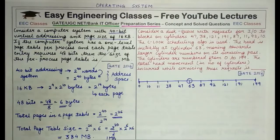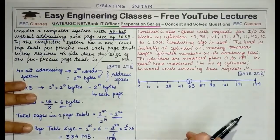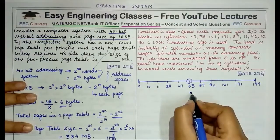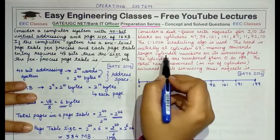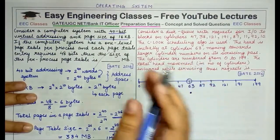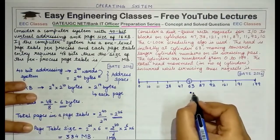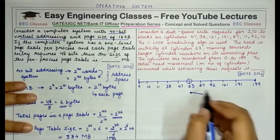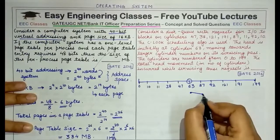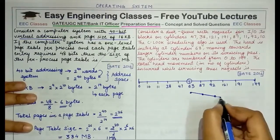So technically the head only moves in one direction. Starting from 63, the head moves right toward larger cylinder numbers. The first request in its path is 87, so it services that. Then it proceeds right to 92, then 121, then 191.